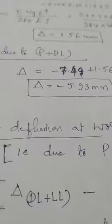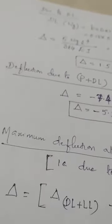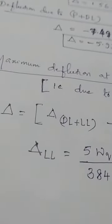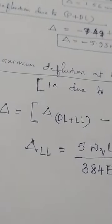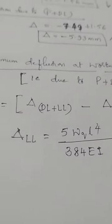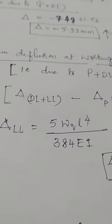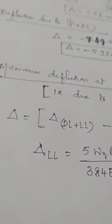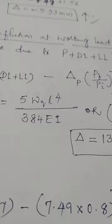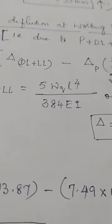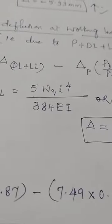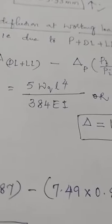For maximum deflection at working load — with live load applied — the loss ratio is given, so this is a long-term deflection calculation. However, φ (creep coefficient) is not given, meaning creep is neglected. Therefore the (1 + φ) term in the Linz formula becomes 1, simplifying the formula to: δ = δ_dead+live − δ_prestress × (pf/pi).